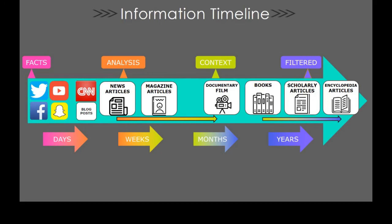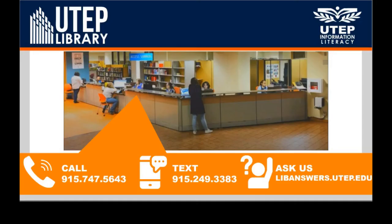And so that's one of the other things that a librarian can help with is that if you can't think of how can I find a book on something like this that's more current, this is what we can help with is thinking about what piece of information can you find now and what piece of information are you going to be able to find for these different other types of sources that might be required for you in each assignment that you're doing based on the course. So if you need any assistance, contact the library. You can call us at 915-747-5643 or text us at 915-249-3383 or ask us at libanswers.utep.edu.